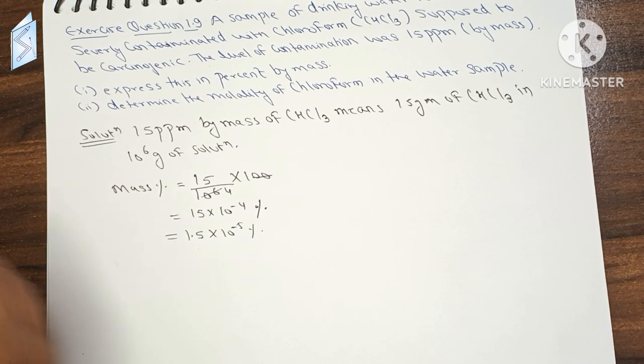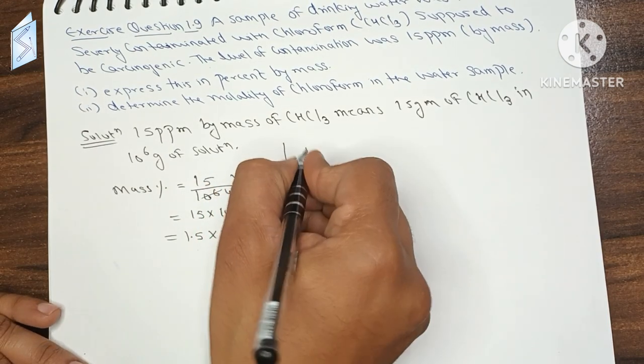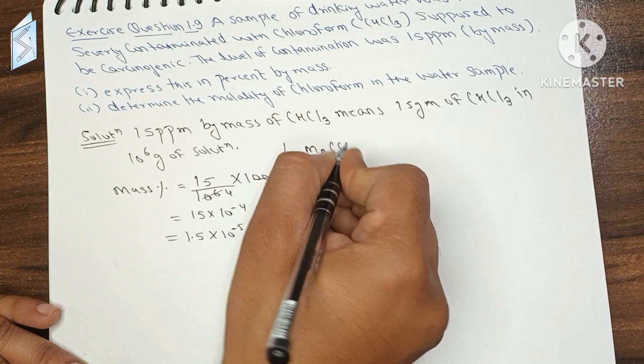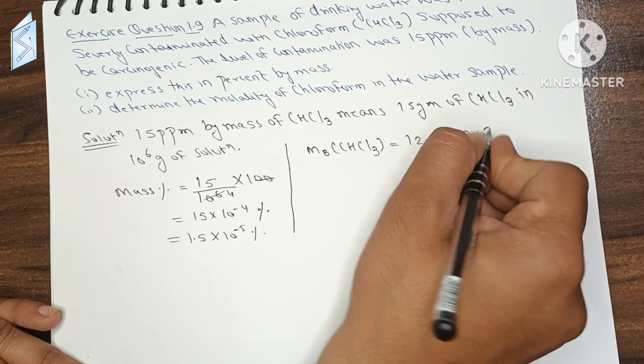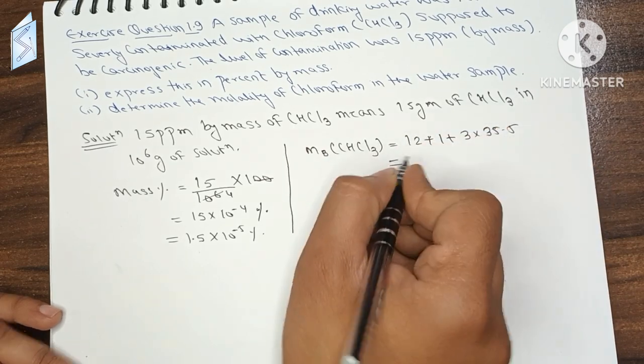Now we have to find molality. For molality, we will start with molar mass of chloroform CHCl3. So, carbon 12, hydrogen 1, and chlorine 3 into 35.5.